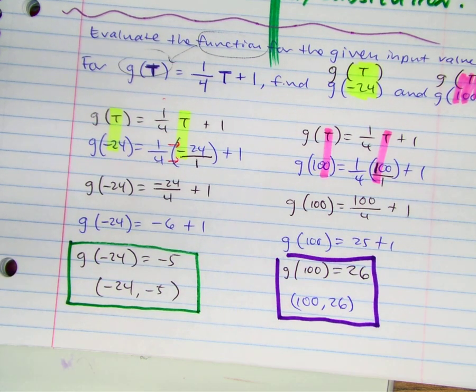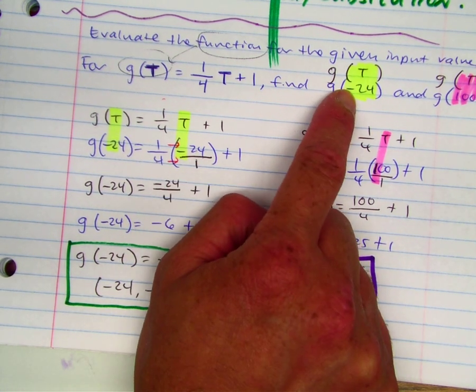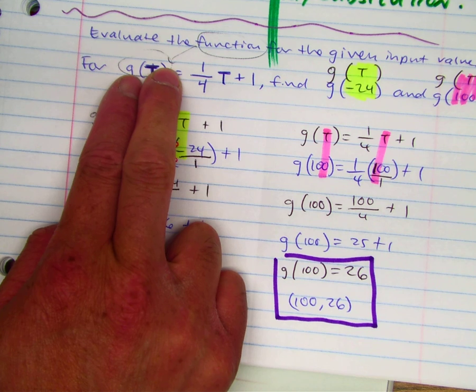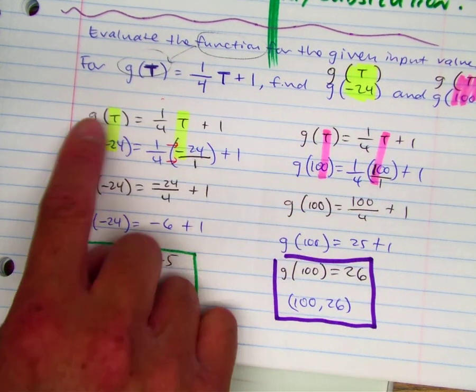So for function notation, you're still doing a substitution. You're essentially evaluating. The only difference is we have this thing called function notation. Place it above your input as a clue, and it tells you what to substitute.